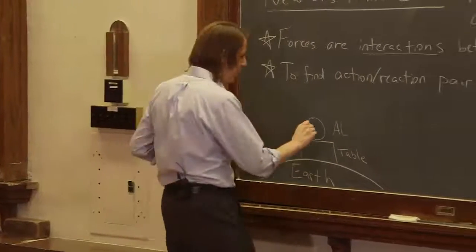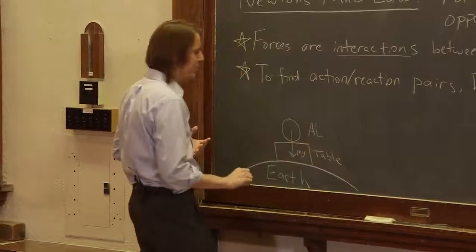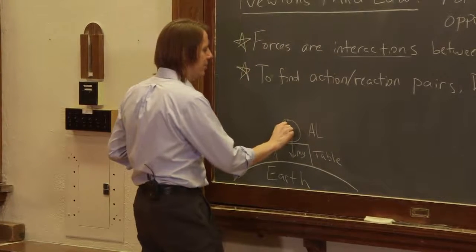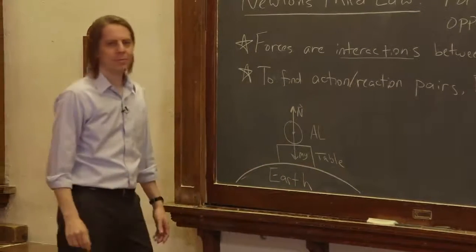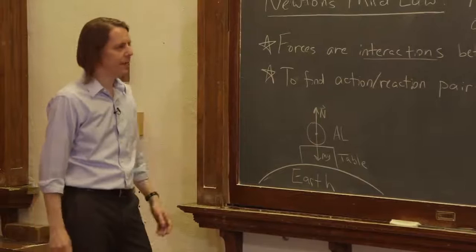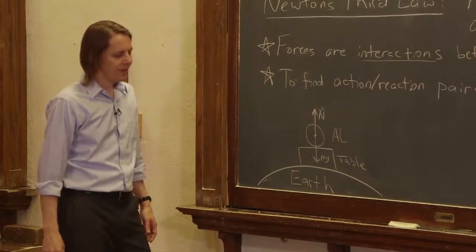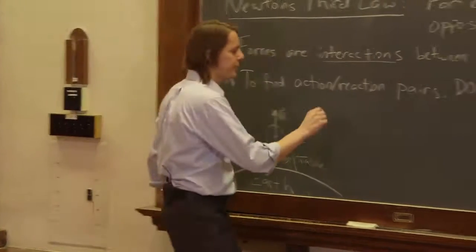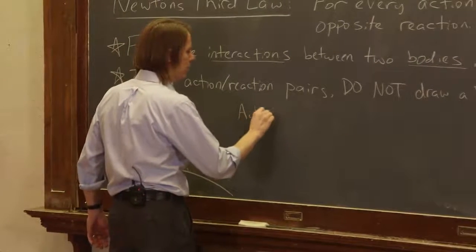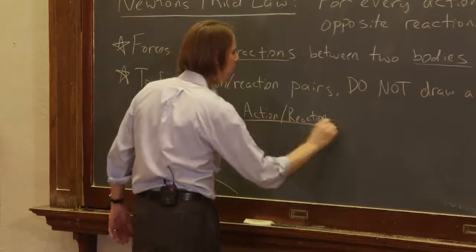We say, why is Al not moving? It's because he has Mg pulling him down, but the table is giving a normal force N pushing him up. The sum of those forces is zero. But that is not how we find an action-reaction pair. To define an action-reaction pair, let's first think about Mg.